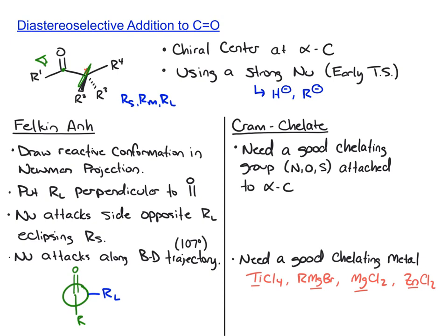When we do practice problems, we're going to draw two Newman projections — one putting R large on the right, one putting it on the left. What you want is the conformation that gives you R medium and R small, with R small at the bottom, so that the nucleophile eclipses the smaller group along the Bürgi-Dunitz trajectory. The other Newman projection would have the medium-sized group at the bottom, and that's not the one you want because the eclipse between the nucleophile and R small is the preferred interaction.